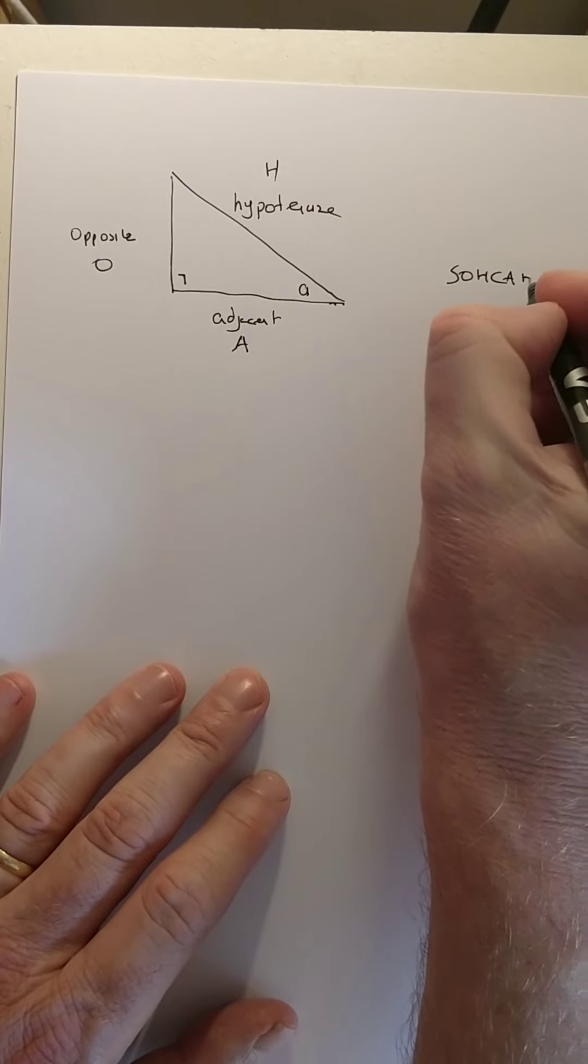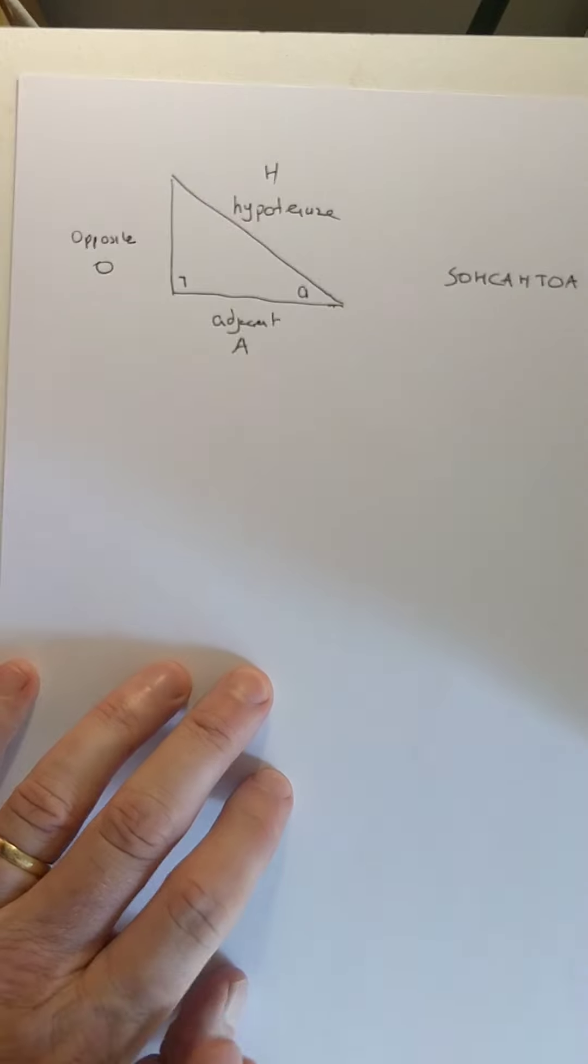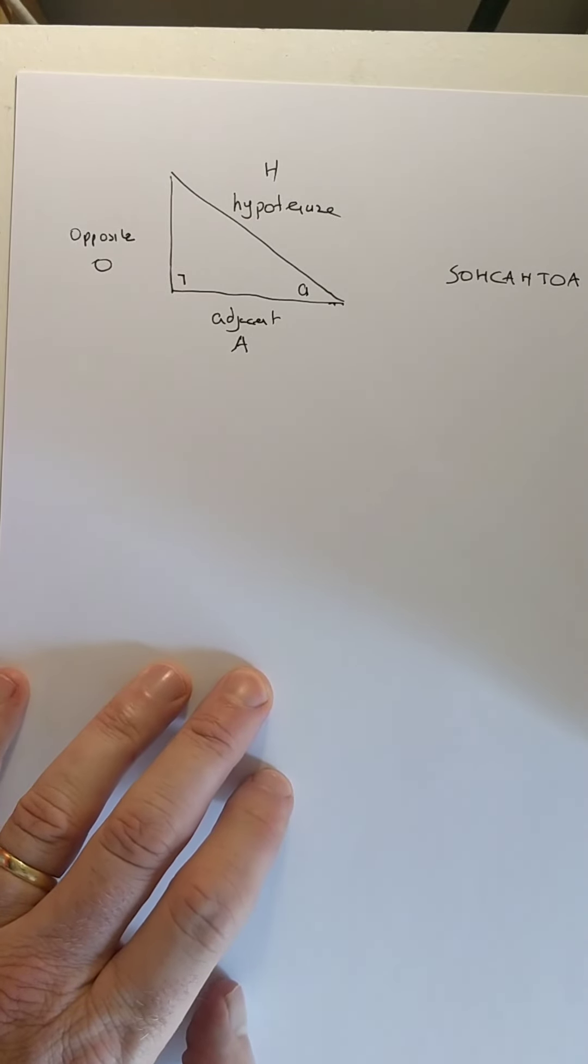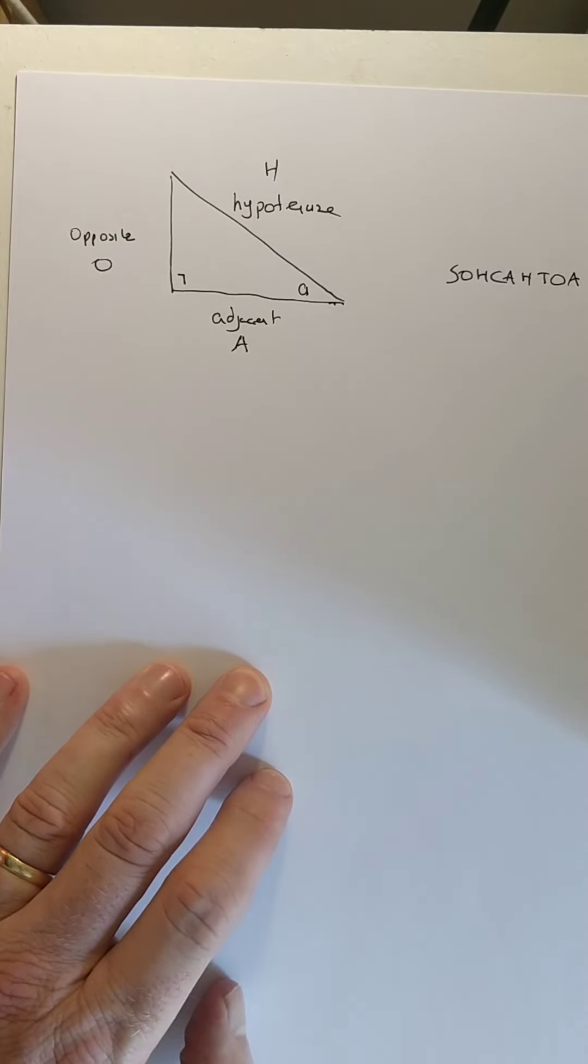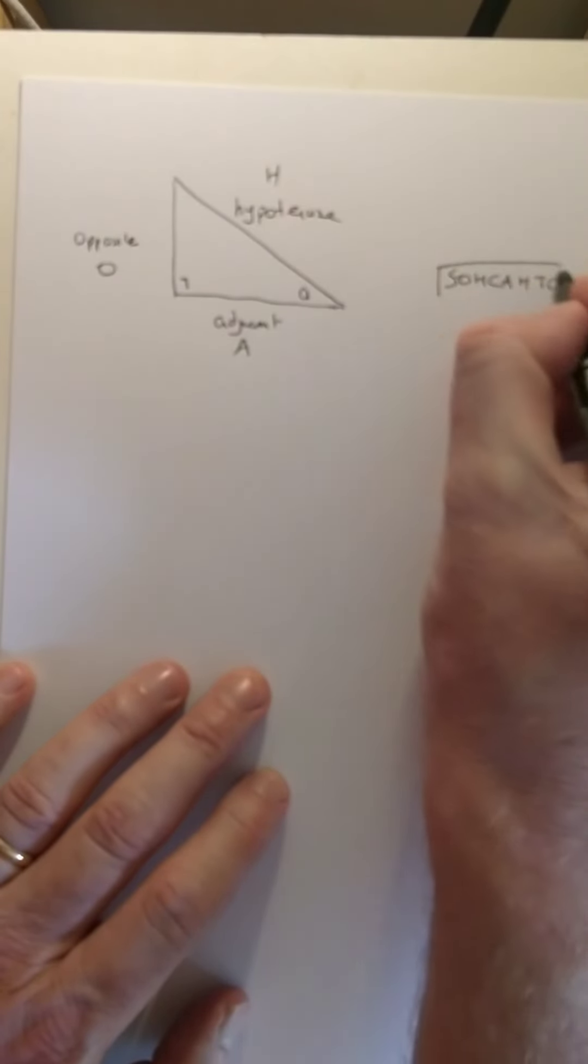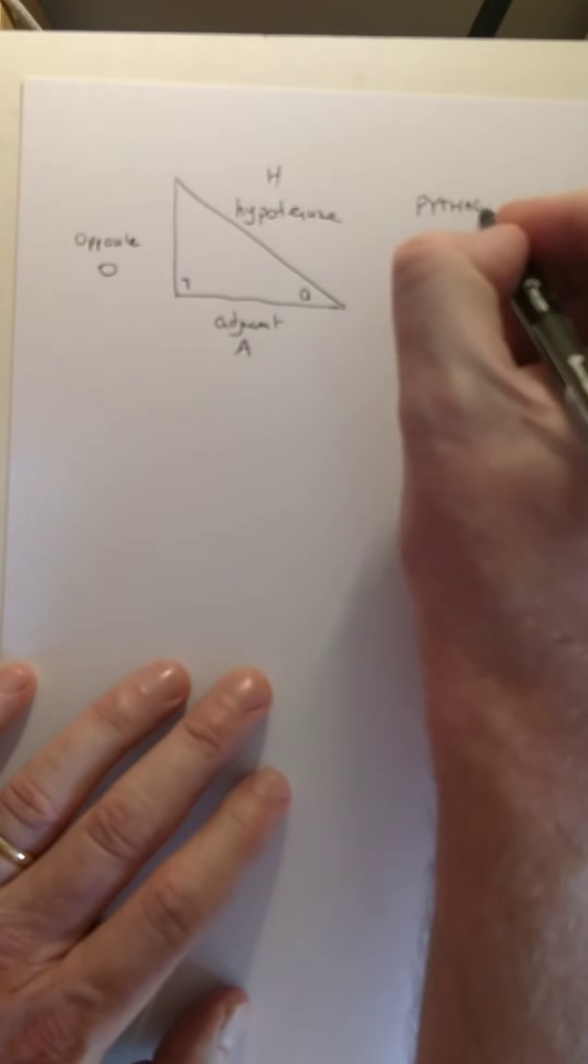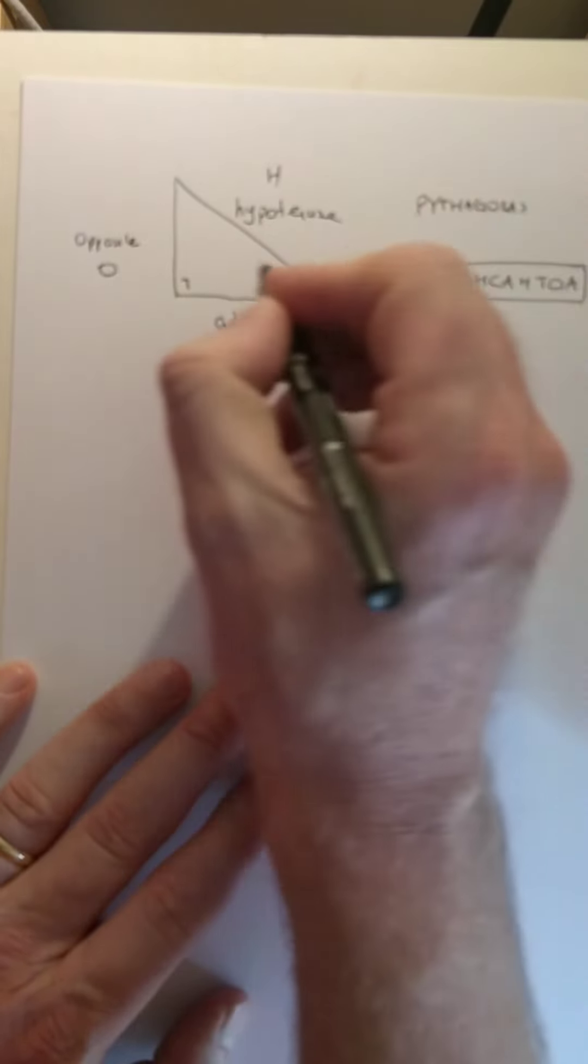So you have your two friends, Mr. SOHCAHTOA and Mr. Pythagoras. SOHCAHTOA, any time there's an angle involved, it's SOHCAHTOA. If there's no angle involved, if it's just sides, it's Pythagoras' theorem. So you have SOHCAHTOA and his friend Pythagoras, two of the greatest Greeks that have ever lived. Possibly.